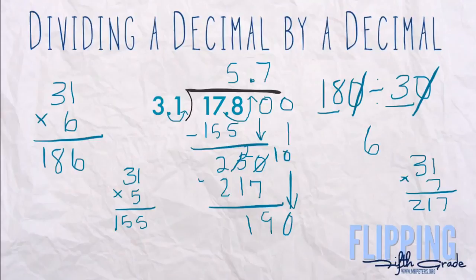Because we went to the nearest hundredth. So we already know previously that 31 times 6 is 186, so that'll be perfect for 190. So I'm going to put my 6 up here and 186 down here. So we're going to get a remainder of 4. And like I said, you could go on for a long time, but in this case I think we'd be okay with the answer of 5.76.